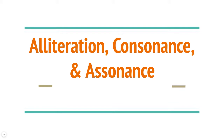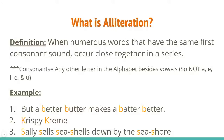This video is going to cover alliteration, consonance, and assonance. Let's start with alliteration. Alliteration is when numerous words that have the same first consonant sound occur close together in a series.